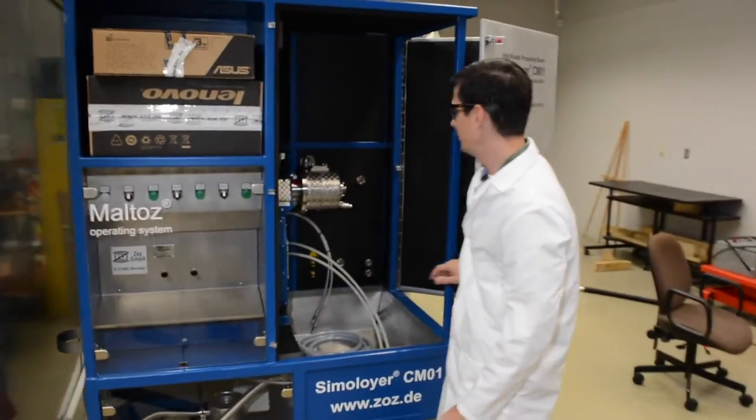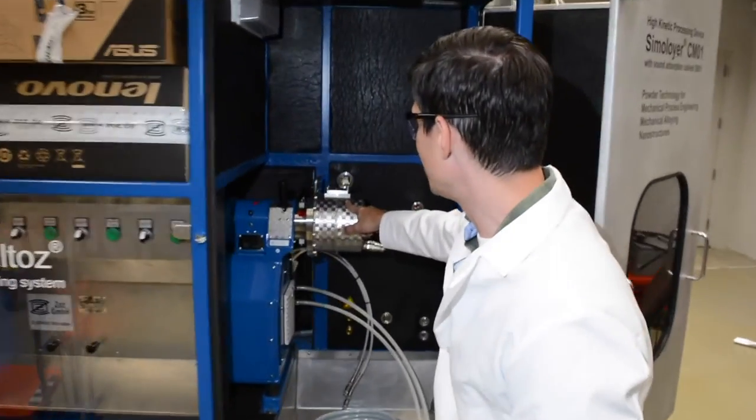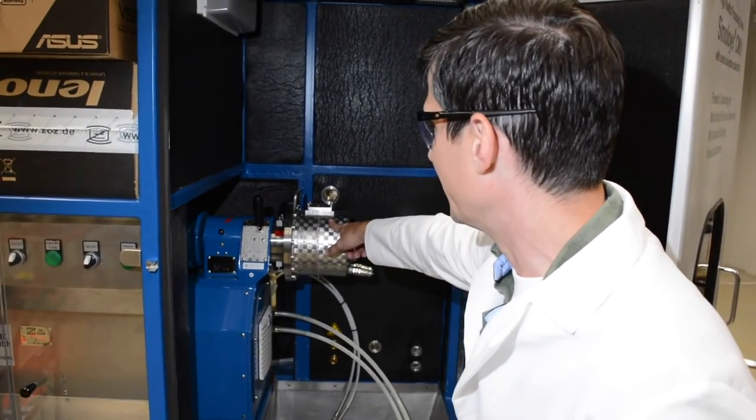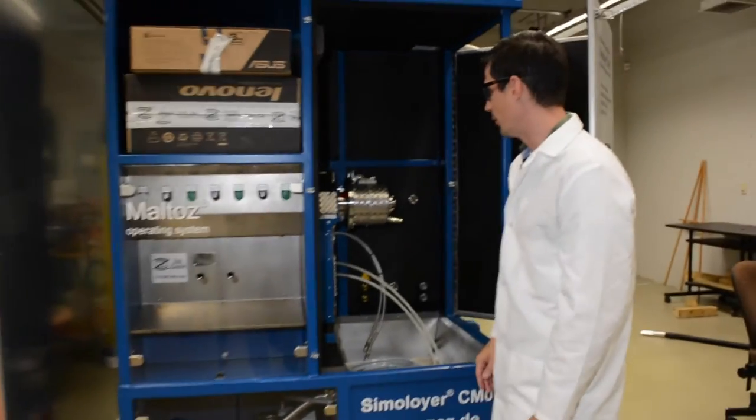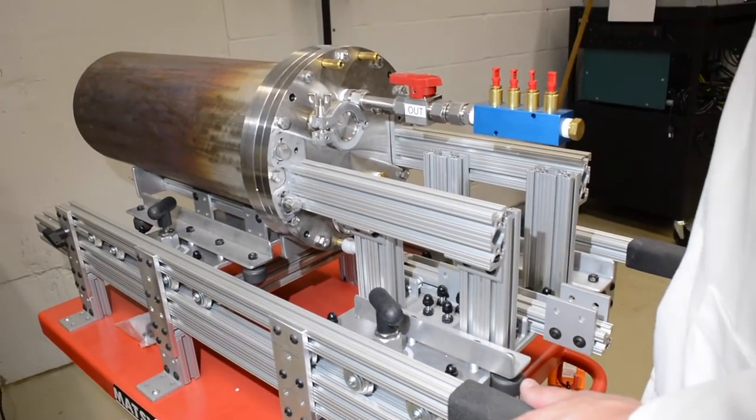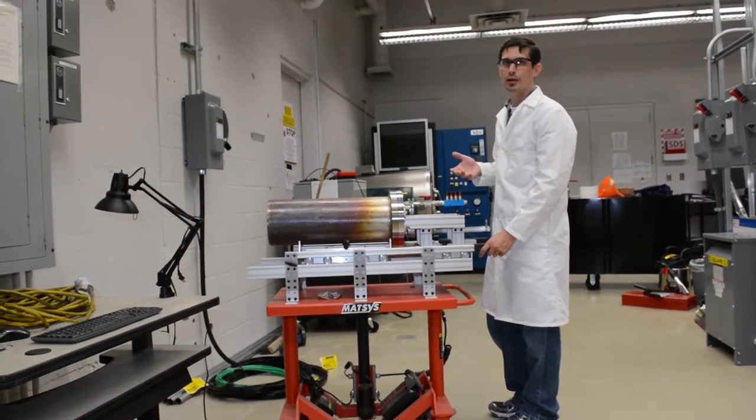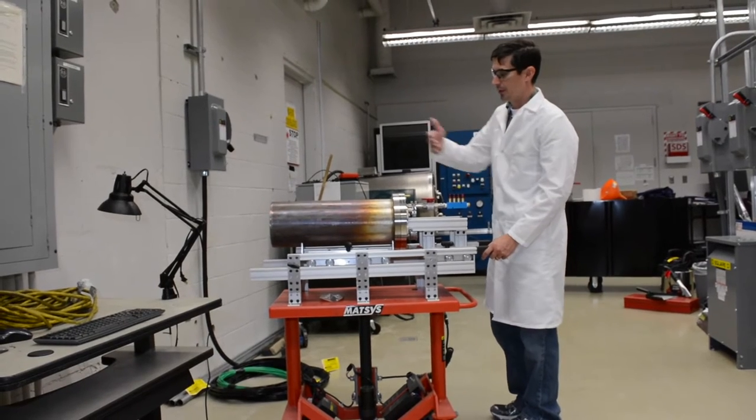Darling earned his doctorate from North Carolina State University in 2009 and immediately started working for the U.S. Army as a postdoctoral fellow at the Army Research Laboratory. He soon became a federal employee at the lab and began his work on nanomaterials research.